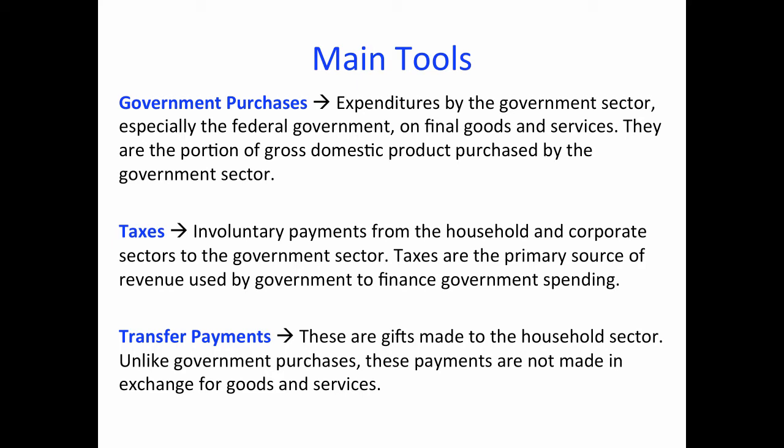The government has three main tools to achieve these goals. Number one: expenditures by the government sector, particularly the federal government, on final goods and services — these are called government purchases, which includes spending on public schools, the military, the highway system, etc. Number two: taxes, which are involuntary payments from the household and corporate sectors to the government sector. Number three: transfer payments, which are essentially gifts made to the household sector.